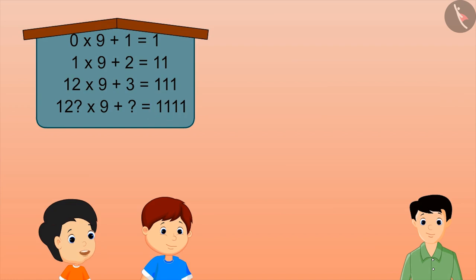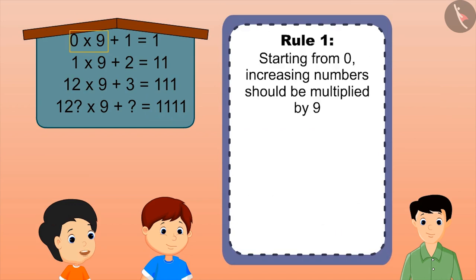Zero multiplied by 9 gives zero, plus 1 gives 1. Then 1 multiplied by 9 gives 9, plus 2 gives 11.